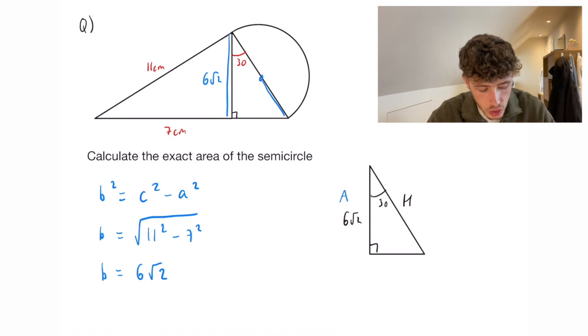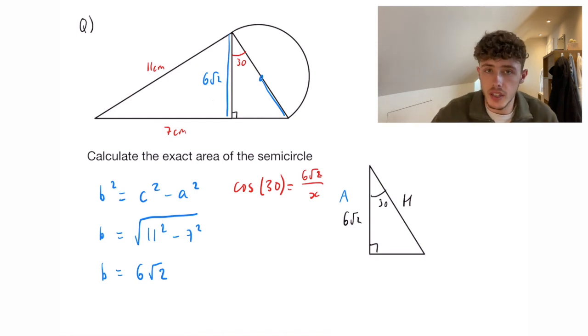Now we currently have the adjacent which means we're going to be using cos. So cos of 30 equals the adjacent which is 6 root 2 over our hypotenuse and then we would do 6 root 2 divided by cos 30 and that will get us our hypotenuse. So x is equal to 4 root 6.